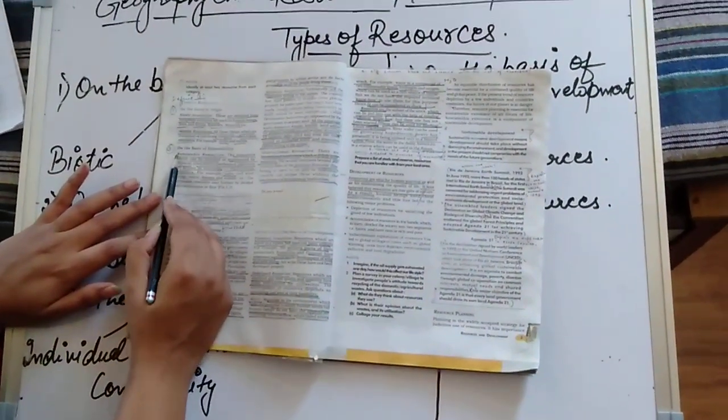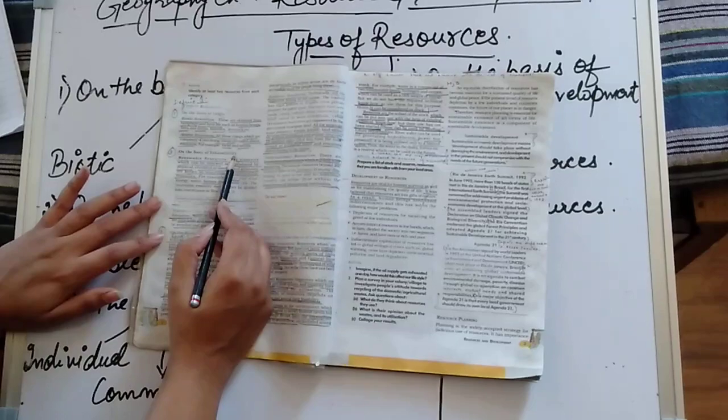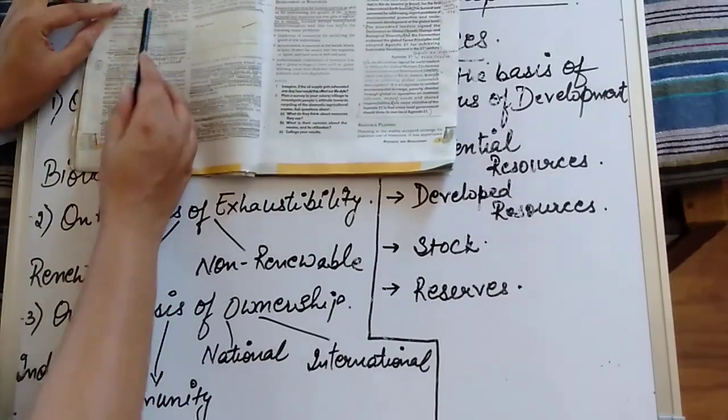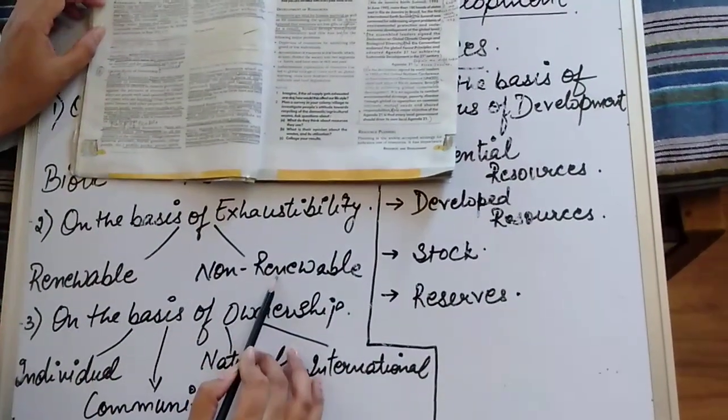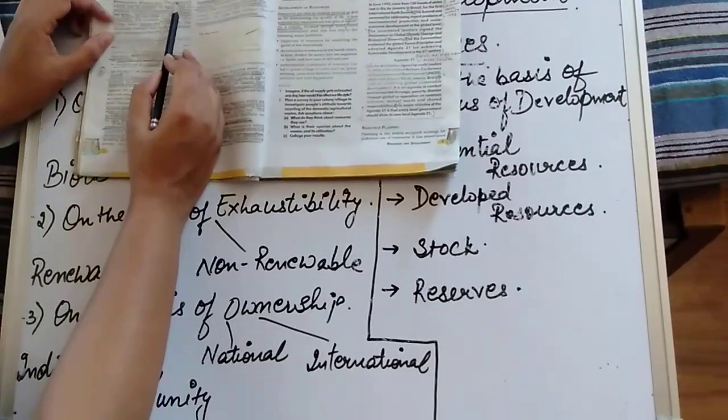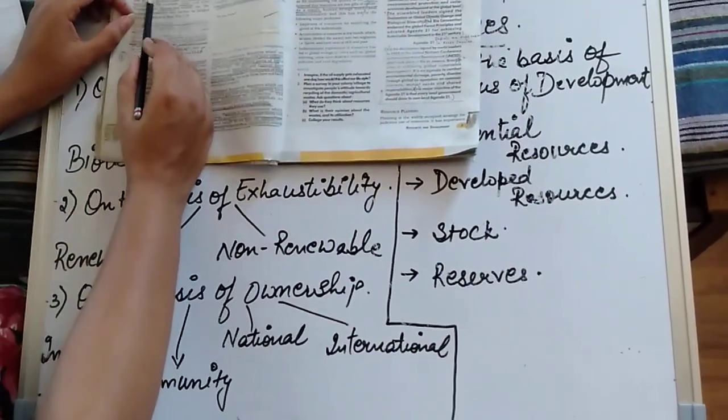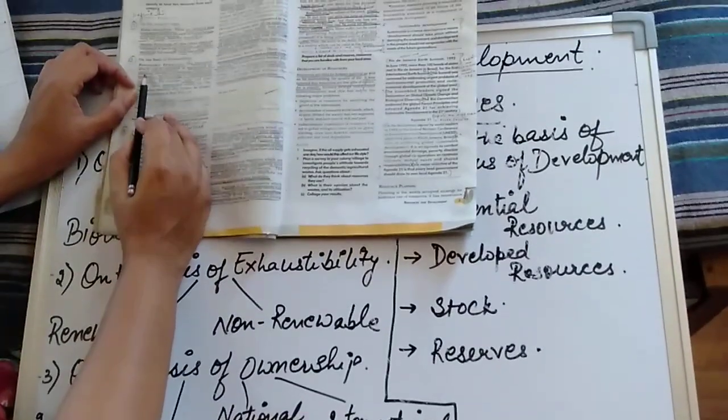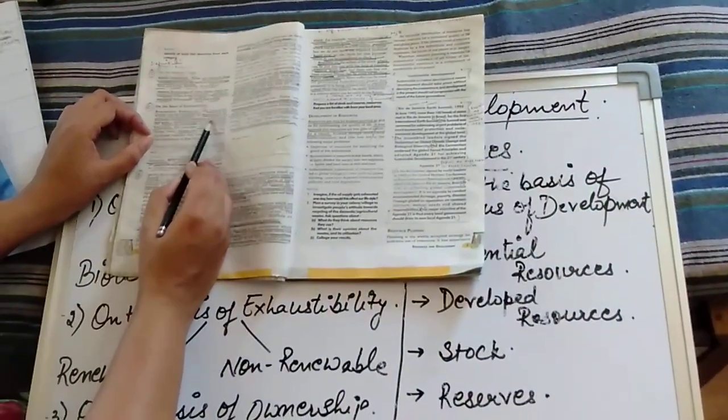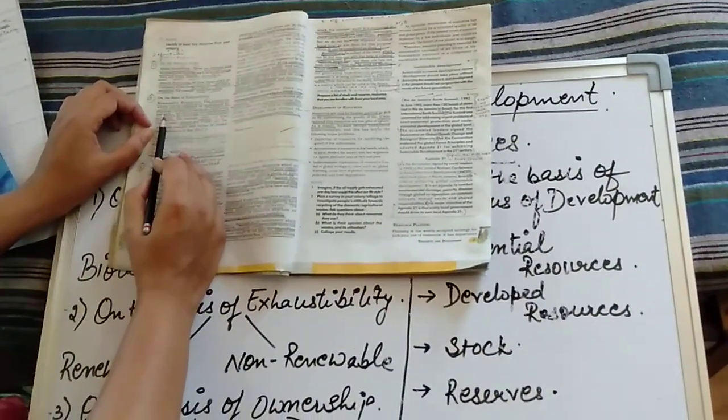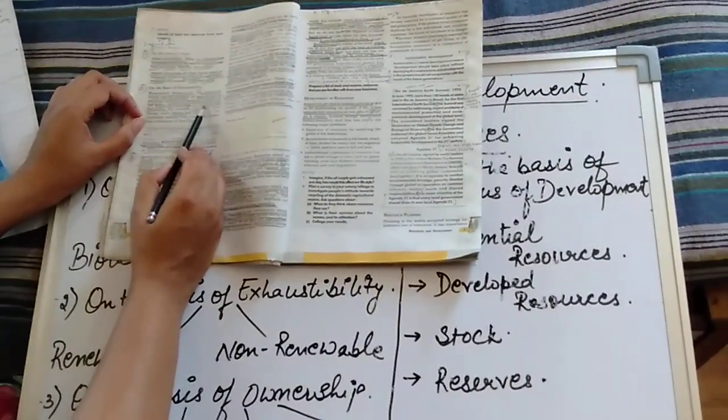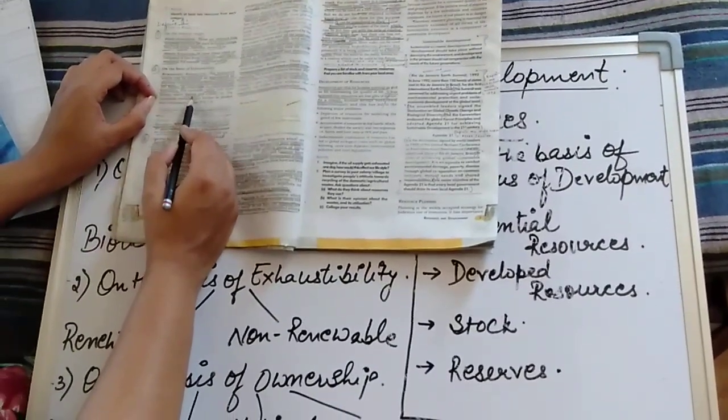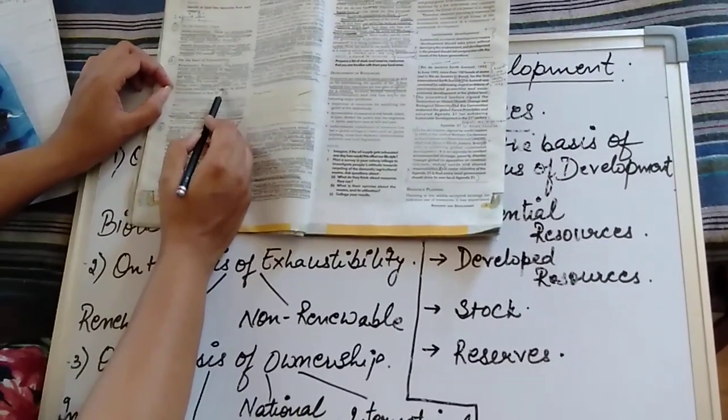Secondly, on the basis of exhaustibility, the resources can be classified into two forms, i.e. renewable and non-renewable resources. Renewable resources are those resources which can be renewed or reproduced by physical, chemical or mechanical process. They are known as renewable or replenishable resources. For example, solar and water energy, forest, wildlife, etc.